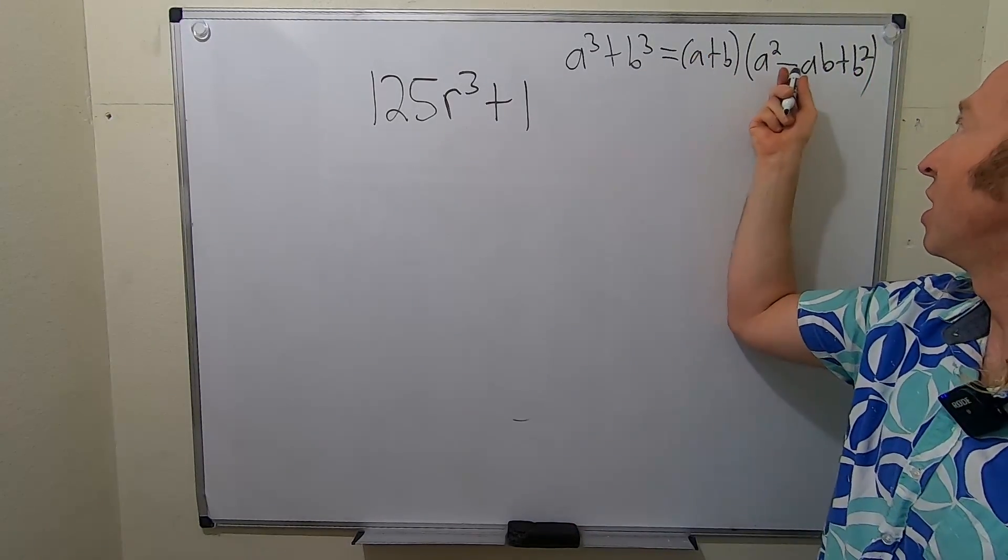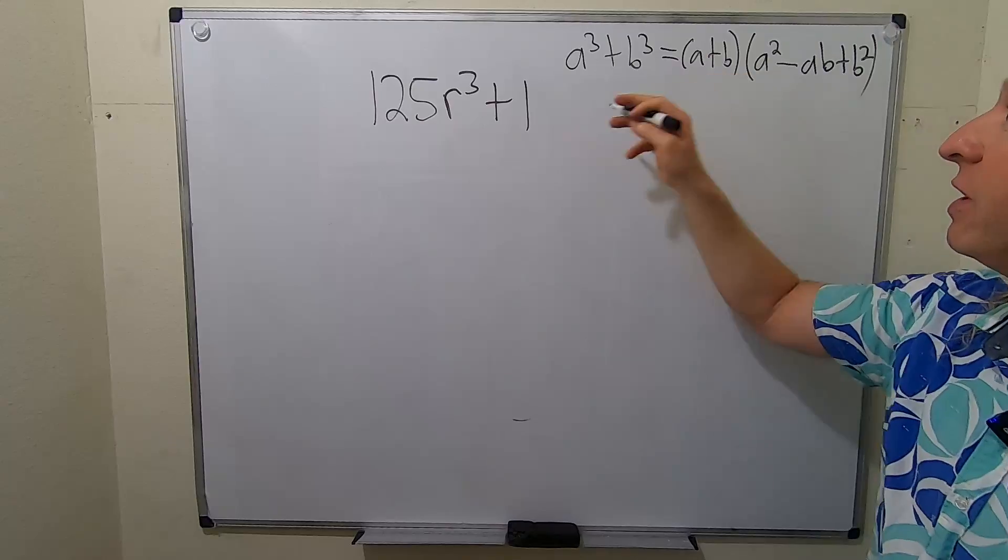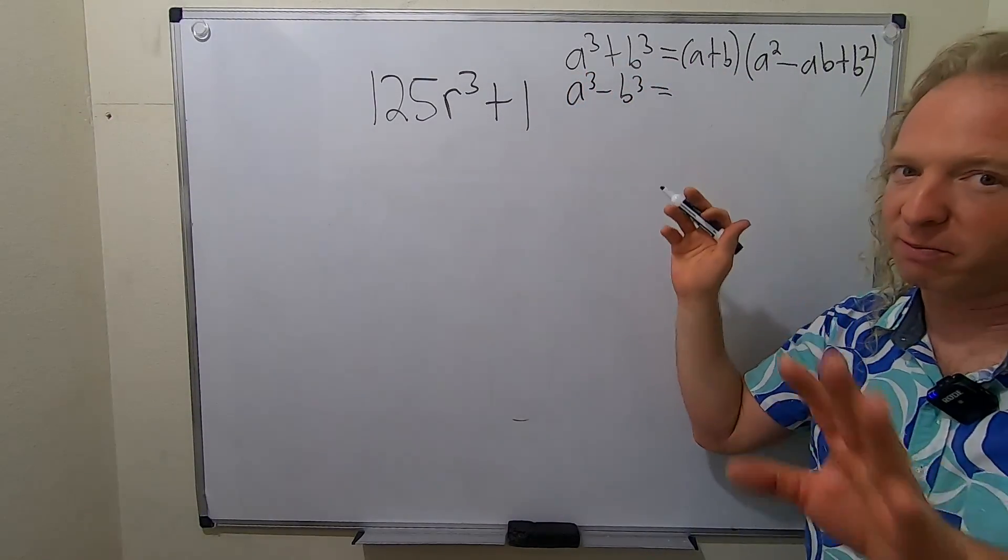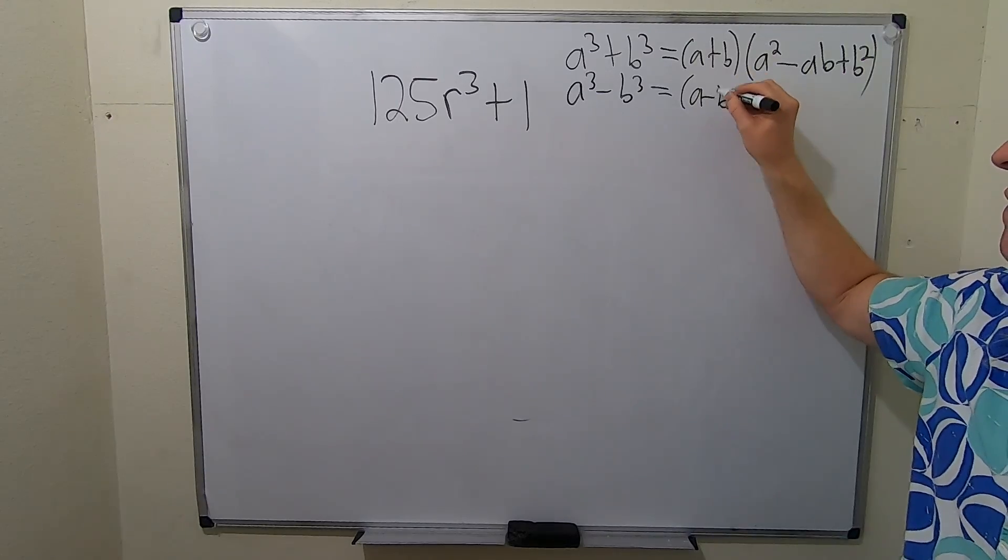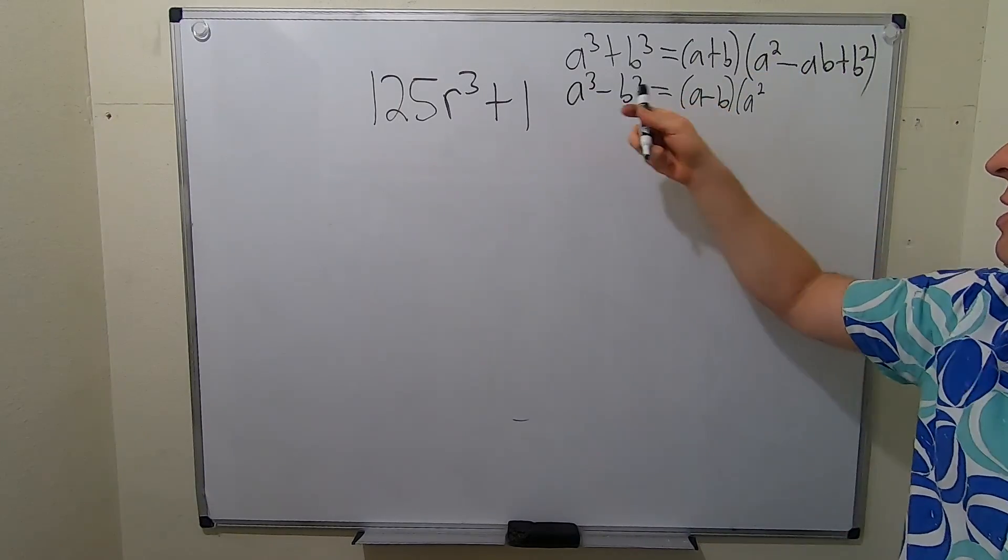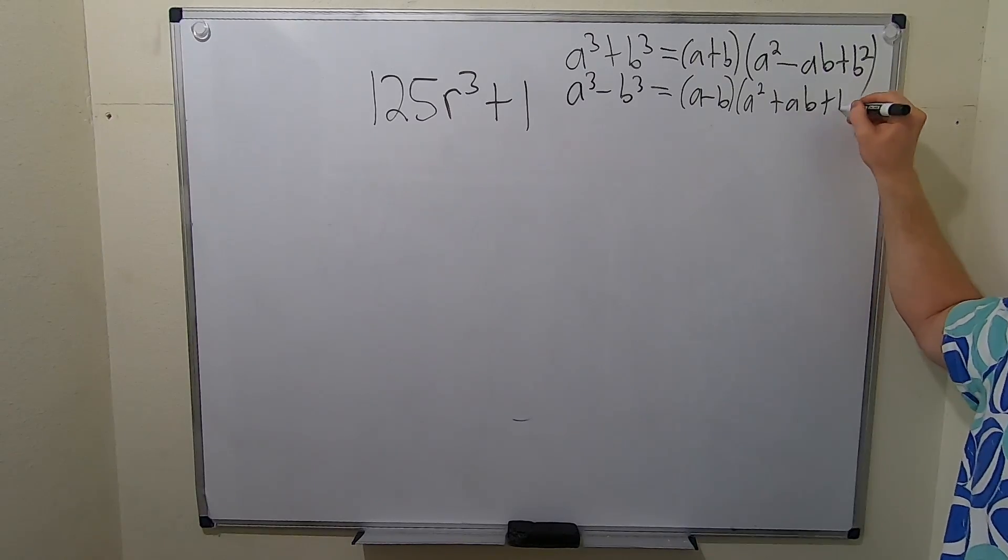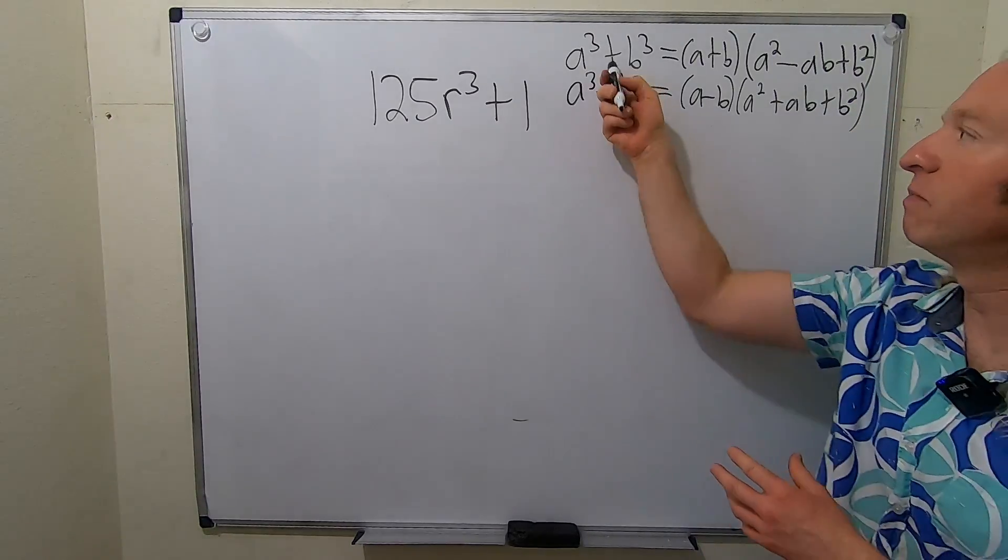So keep it, switch it, keep it, switch it. And the last one is always positive. If you look at the difference, let me just show you the difference of cubes, just for comparison. This is a - b, a², and then so you keep it, keep it, then you switch it. Right, you switch it, and then it's always positive at the end.